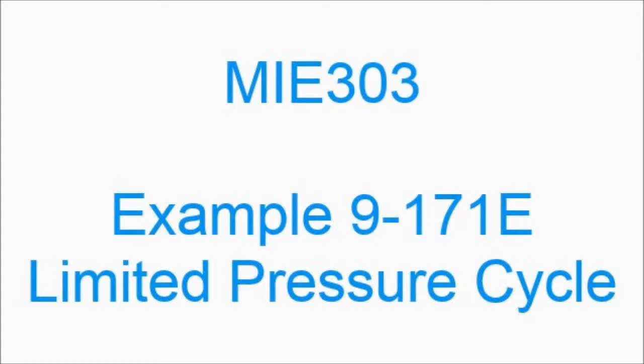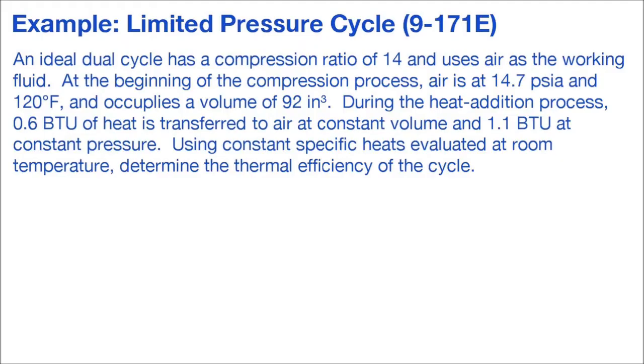We'll go through an example looking at the limited pressure cycle. Here we have an ideal dual cycle or limited pressure cycle with a compression ratio of 14, air is coming in at 14.7 psi at 120 Fahrenheit. We're given the volume and the two heat addition processes, one's at 0.6 BTU and the constant pressure heat input is 1.1 BTU.